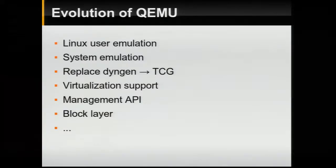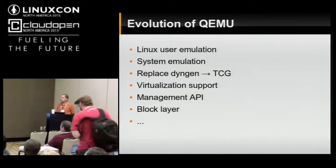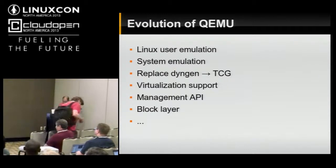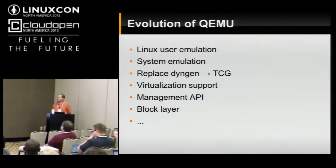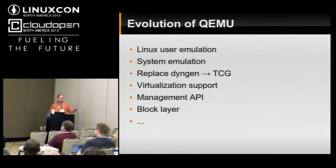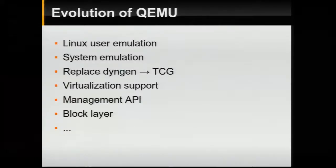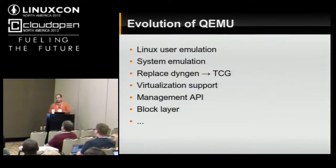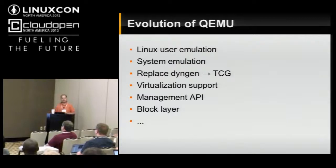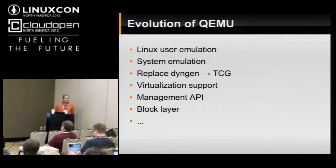Let's talk about the evolution, mainly to explain the current state of QEMU. It started out as what we call Linux user, which means a mechanism for running x86 Linux binaries on top of SPARC — which was where it all started. If you're familiar with the Transitive project, Rosetta from Transitive, it's the same basic idea. We tacked on system emulation as sort of an afterthought, so the whole notion of running a virtual machine was a second thought.